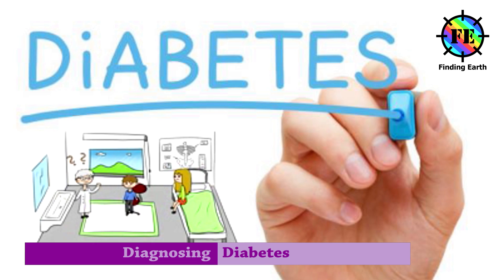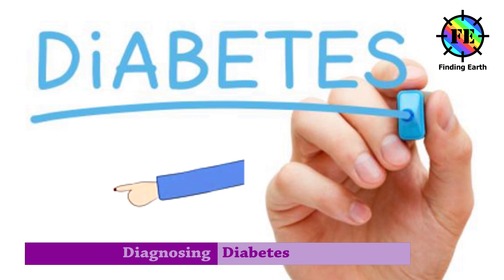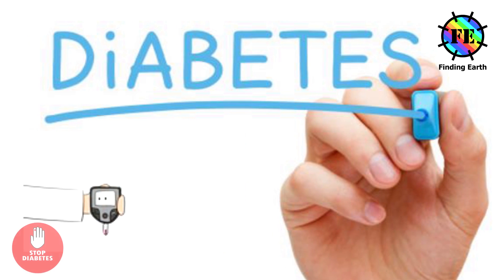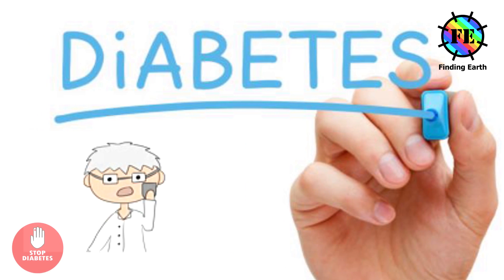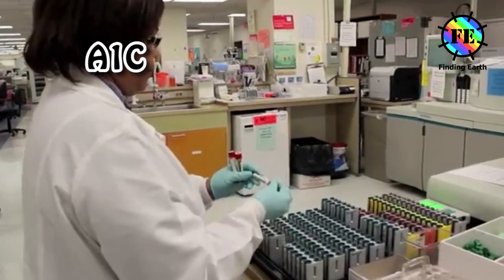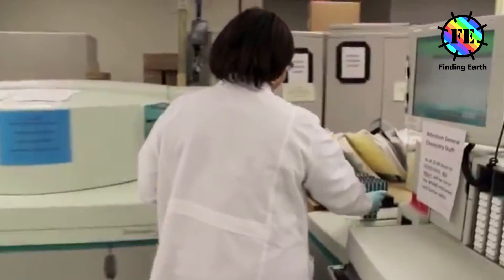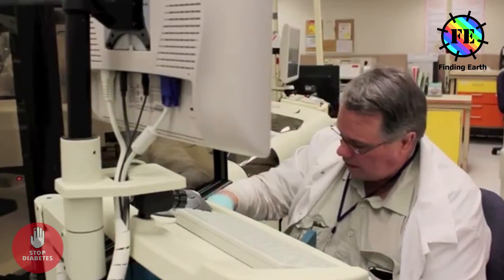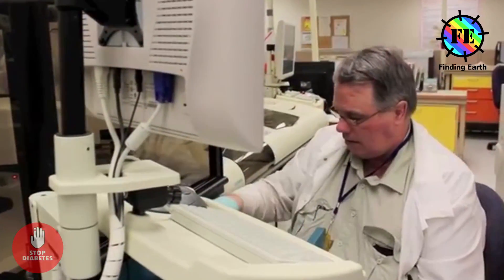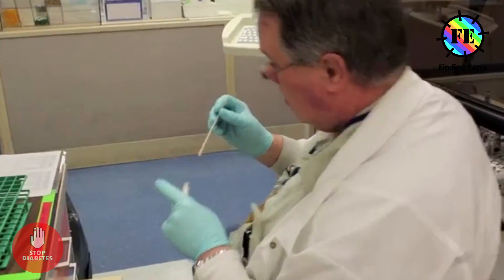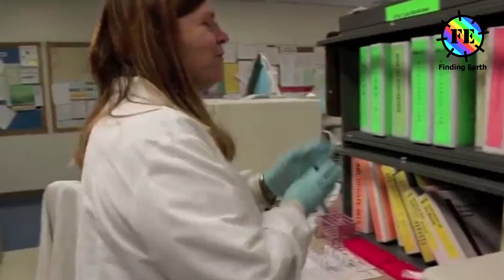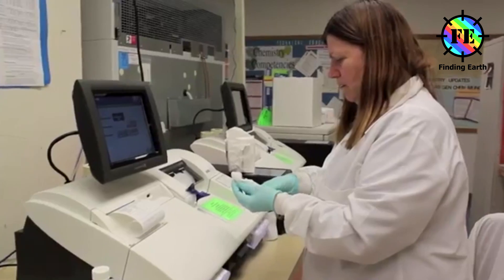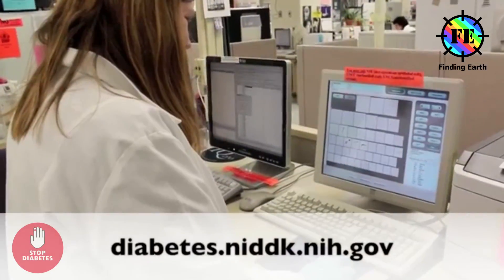There are several ways to diagnose diabetes. The A1C test measures your average blood glucose for the past two to three months, so no fasting is needed. An A1C less than 5.7 percent is normal; A1C of 5.7 to 6.4 percent indicates pre-diabetes.